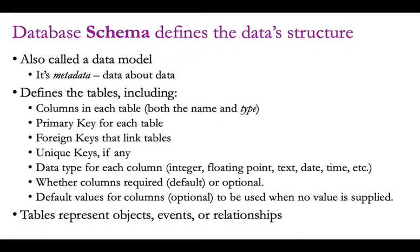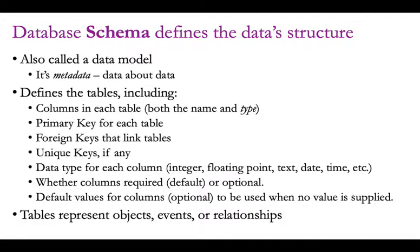Columns have both a name and a type. We'll talk about primary keys, foreign keys, and unique keys. We'll also talk about data types in a later lecture — a column should only store one type of data, be it integer, floating point, text, date, time, and so on.